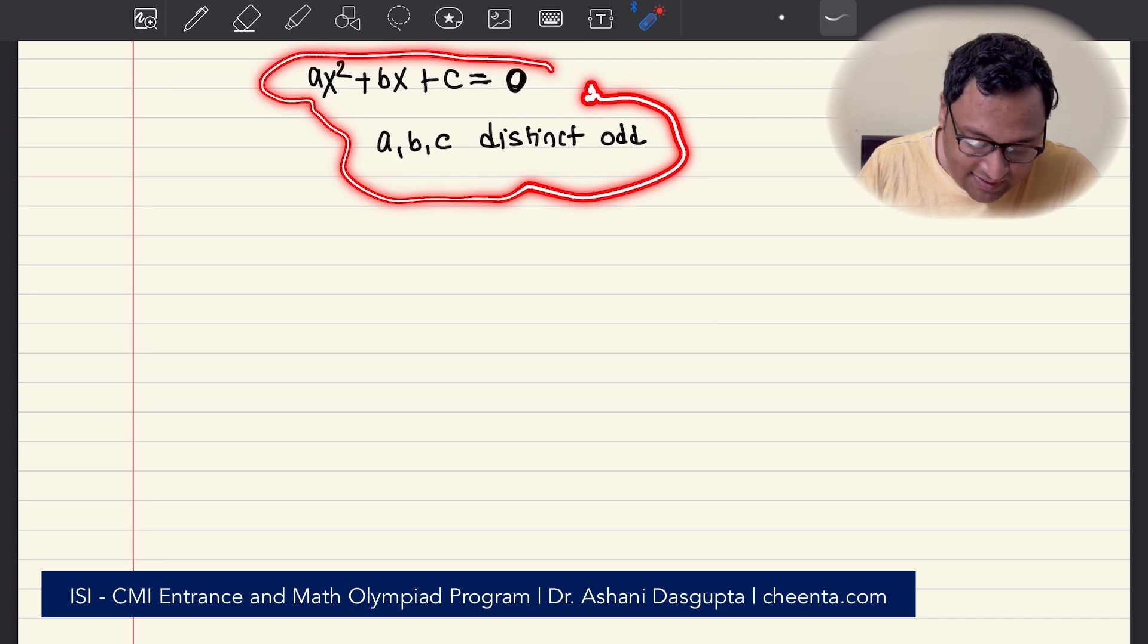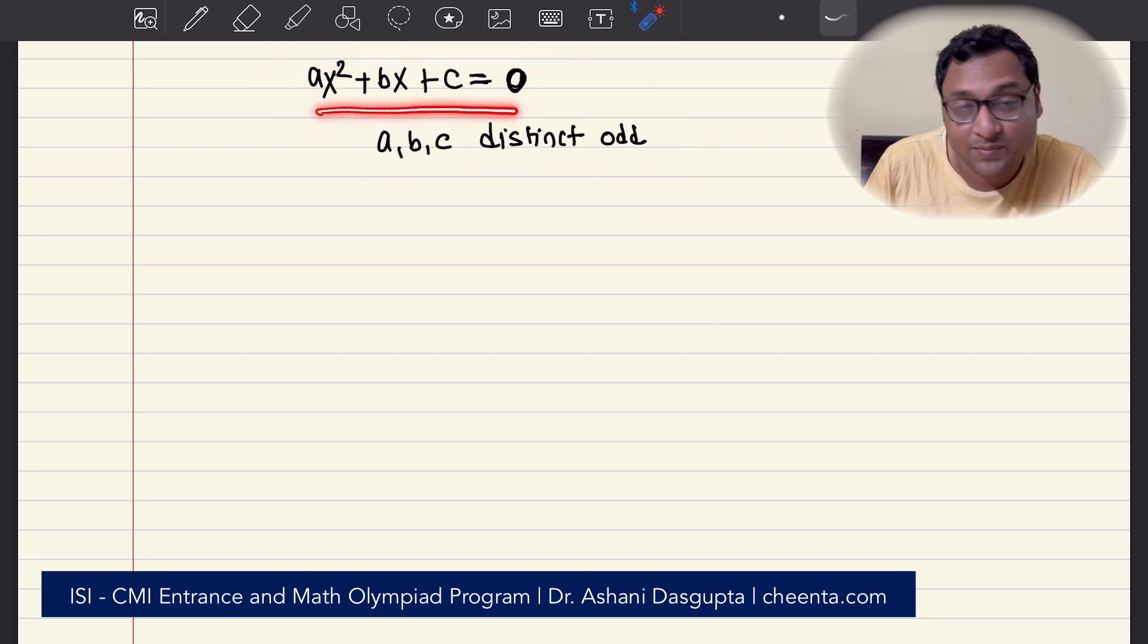The problem says that we have a quadratic equation Ax² + Bx + C = 0, where A, B, C are distinct odd numbers.